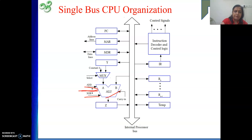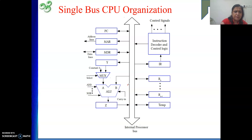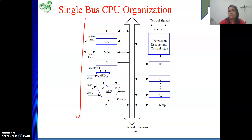The ALU has 2 inputs and its output is connected to the Z register. Z is a temporary register and it is not programmer visible. Signals for add, subtract, or whatever operation the ALU can perform are given based on the output of the instruction being executed. Both operands must be available, then the operation signal is given, and the result is transmitted to the Z register. There is also a carry-in line for addition operations — if it is on, that means it is 1.